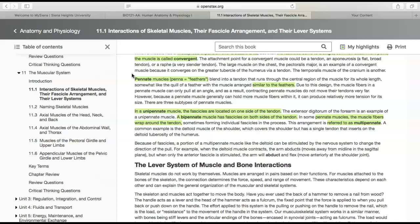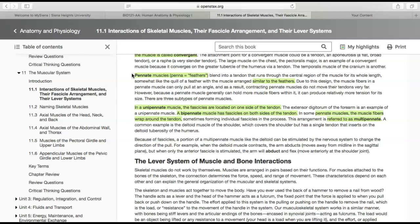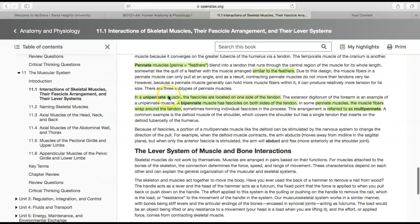The muscle fibers are arranged similarly to feathers. Due to that design, they can only pull at an angle. As a result, they're not going to be able to move those tendons very far, but they can hold a lot of tension for their size. There are three subtypes of pennate muscles.